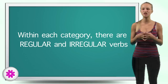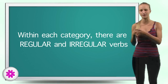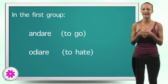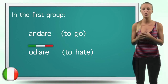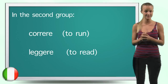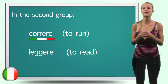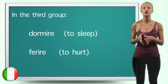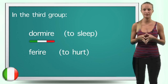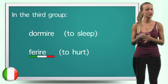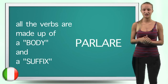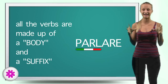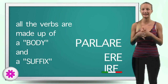Within each category, there are regular and irregular verbs. In the first group, we have verbs like andare — to go, odiare — to hate. In the second: correre — to run, leggere — to read. And in the third: dormire — to sleep, ferire — to hurt. As you have noticed, all the verbs are made up of a body, like 'parla', and a suffix: -are, -ere, or -ire.